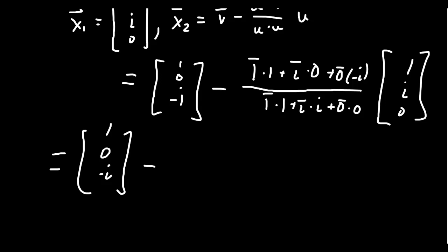And so the conjugate of a real number, of course, is just itself. So you're going to get 1 plus 0 plus 0 for the numerator. For the denominator, you get 1 plus 1. i bar times i is just going to be negative i times i, which is 1. And then 0 there. 1, i, and 0.